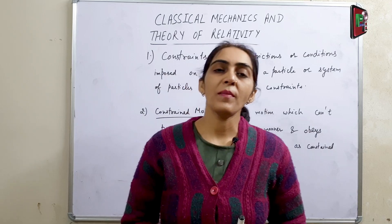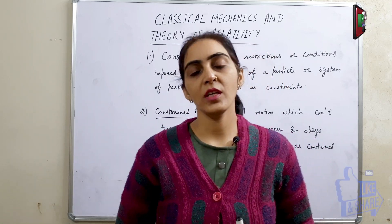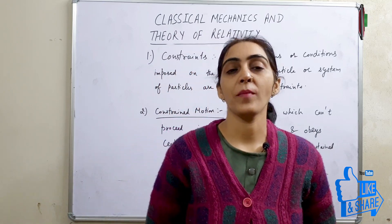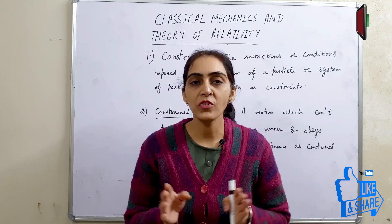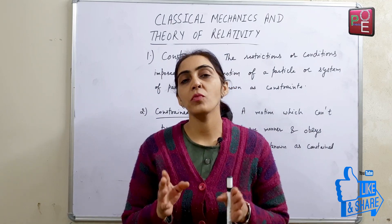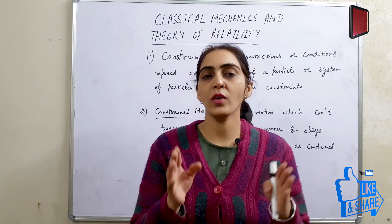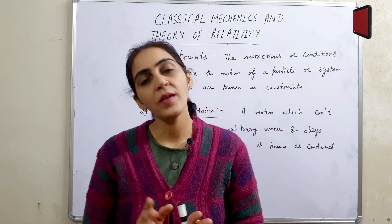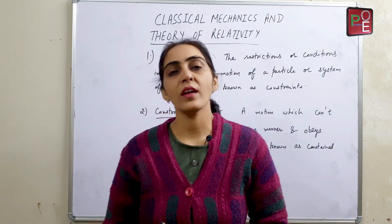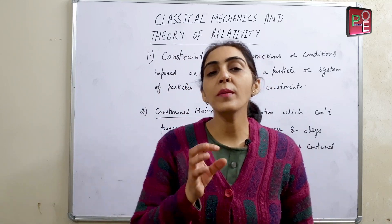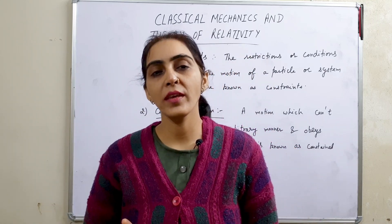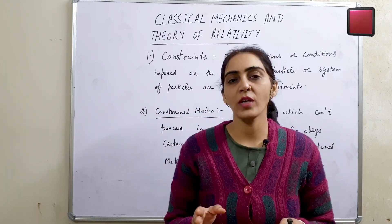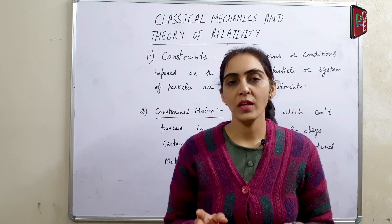इसके examples देखें: जैसे एक bird है जो आसमान में उड़ रहा है, तो उसका motion free motion है। अगर मैं उस bird को एक पिंजरे में बंद कर दूं, तो उसका motion constrained motion हो जाएगा — उस पर conditions लग जाएंगी कि वो उस कमरे से बाहर नहीं जा सकता। तो constraints जो हैं, motion को limit करते हैं लेकिन stop नहीं करते। Motion restricted हो जाएगा, but stop नहीं होगा।